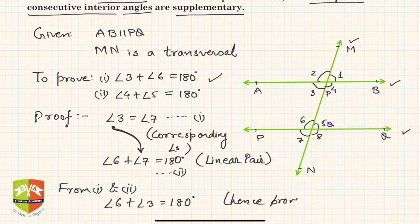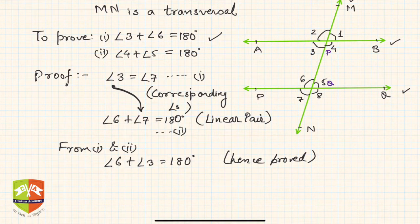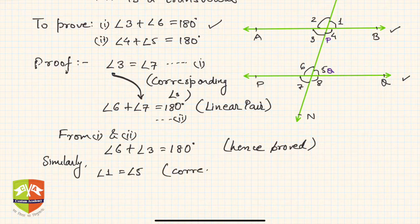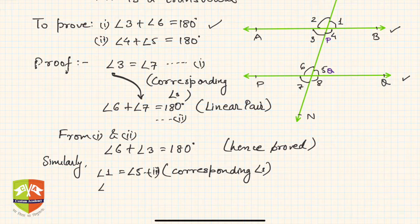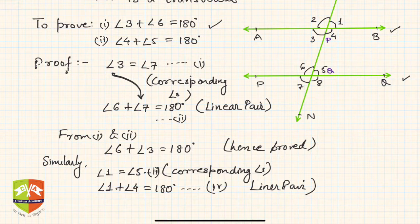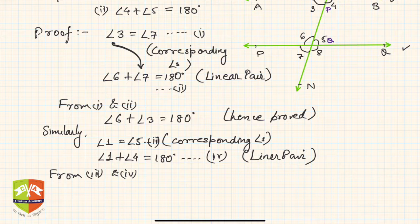Similarly, for the next pair: angle 1 is equal to angle 5, because they are corresponding angles — this is statement three. And angle 1 plus angle 4 equals 180 degrees, because they form a linear pair — this is statement four. From three and four, we can say angle 5 plus angle 4 equals 180 degrees.